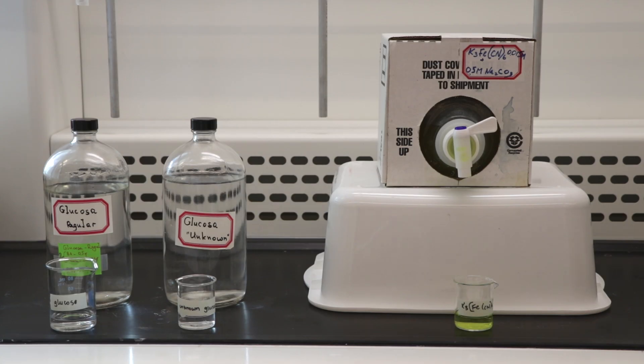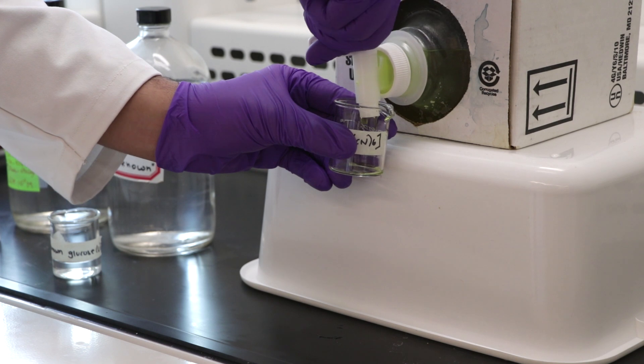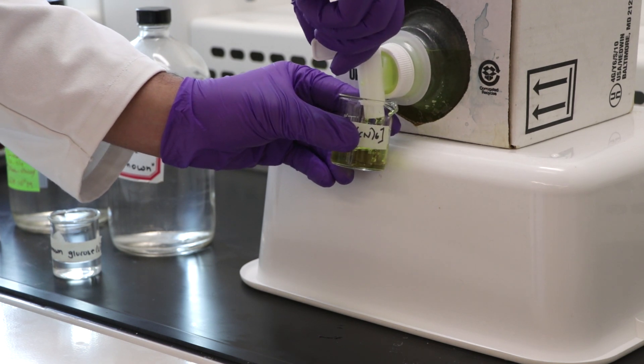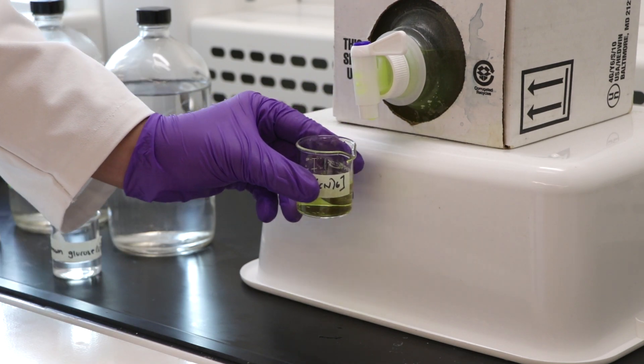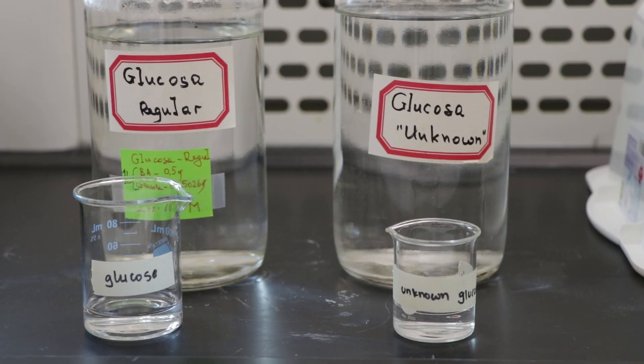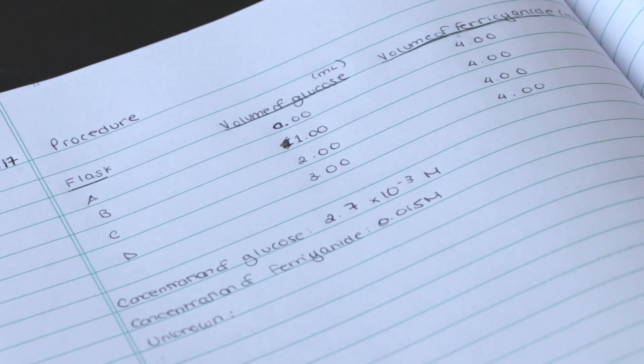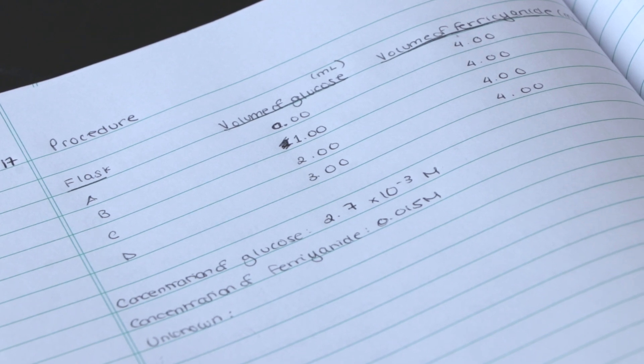The chemicals needed for this experiment can be found in the TA fume hood. Make sure to obtain only as much of each chemical as required with an excess of about 10 to 20 percent and label all beakers. Remember to record the concentration of the chemicals used in your lab notebook.